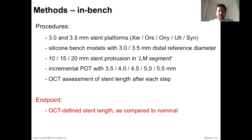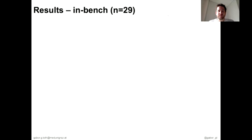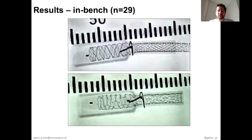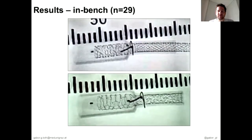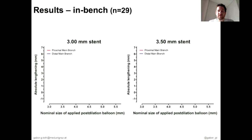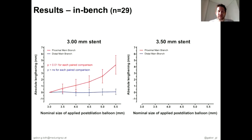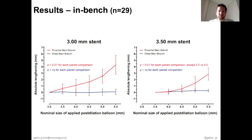The primary endpoint was OCT-defined stent length compared to its nominal value. In total, we performed 29 bench cases, and to our greatest surprise, overexpansion for POT led to lengthening of the stent instead of shortening. Detailed analysis showed that each step of POT resulted in significant lengthening in the proximal main branch segment — shown by the red line for both the 3.0 and 3.5mm stent platforms — with no change in the distal main branch segment shown by the blue line.